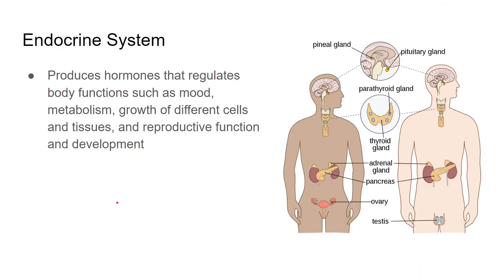Next, you have your endocrine system. This shows the endocrine system of a male and a female — the real difference is that a female has an ovary and a male has testes. Your endocrine system produces hormones that regulate bodily functions such as mood. If you're feeling sad and you cry, that's your endocrine system releasing hormones that go to your brain and allow you to cry.